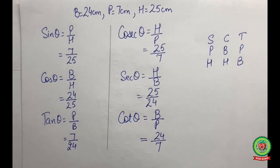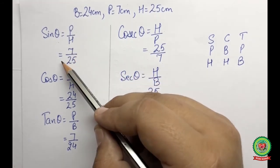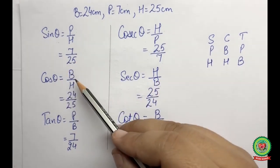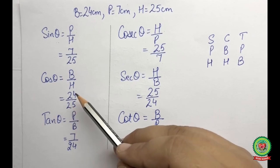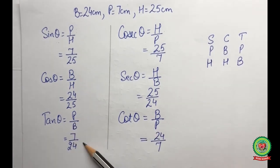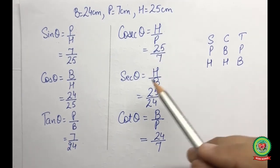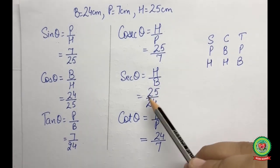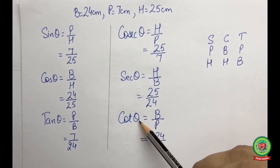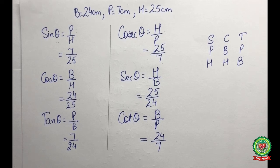Now we can find all six trig ratios: sin theta = p/h = 7/25; cos theta = b/h = 24/25; tan theta = p/b = 7/24; cosecant theta = h/p = 25/7; secant theta = h/b = 25/24; cotangent theta = b/p = 24/7. Students, you all have a worksheet in your snap homework based on these sums — solve all those sums. Thank you and have a nice day.